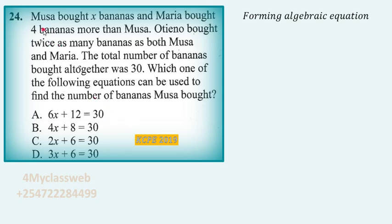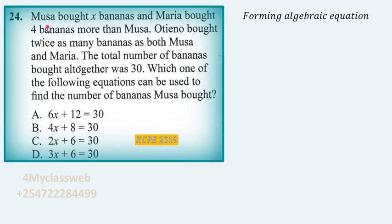We are told that Musa bought x bananas, and Maria bought four bananas more than Musa. Oteno bought twice as many bananas as both Musa and Maria. The total number of bananas bought altogether was 30. Which one of the following equations can be used to find the number of bananas Musa bought?